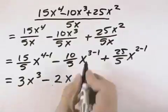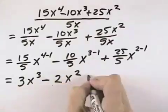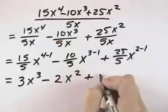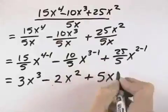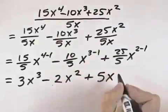Minus 10 divided by 5 is 2, and x to the 3 minus 1 is second power, and plus 25 divided by 5 is 5, x to the 2 minus 1 is first power.